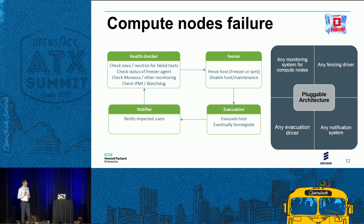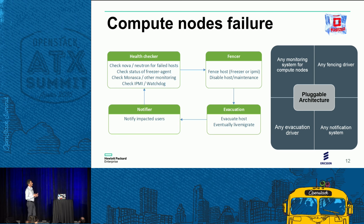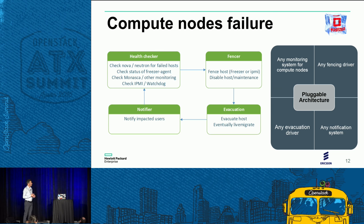We deploy the Freezer agent on our compute nodes to gather and provide information on the node's status. We also use MONASCA — the OpenStack-specific monitoring solution — to gather more information and decrease false positives as much as possible, because we definitely don't want to evacuate a compute node that is actually still running. We can even detect through IPMI the power status or the health check of the nodes, or use watchdog hardware equipment if available.